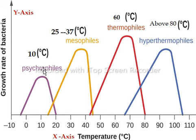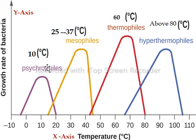Here are those bacteria which grow best at minus 10 degrees Celsius up to 20 degrees centigrade, but they grow optimally at 10 degrees centigrade. They are cold-loving bacteria, or psychrophiles. An example of psychrophiles is Methanogenium bacteria.